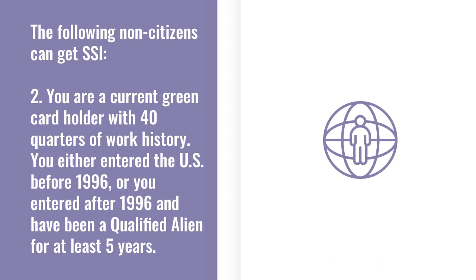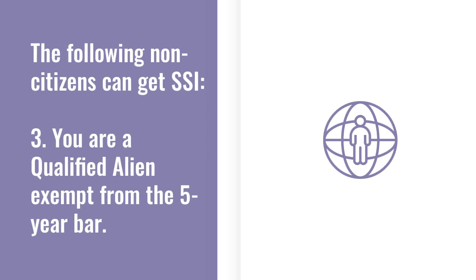Number two, you are a current green card holder. You need to have 40 quarters of work history, which is roughly 10 years. You also need to show either that you entered the US before 1996, or you entered after 1996 but have been a qualified alien for at least five years. Number three, you are a qualified alien exempt from the five-year bar.